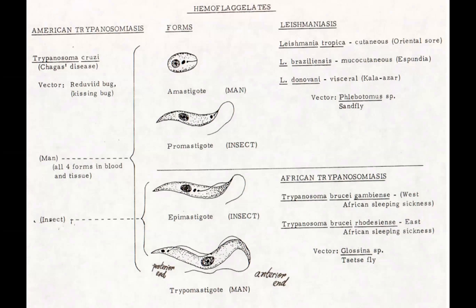Here's the American trypanosomiasis diagram. At the top in reverse order: here's the amastigote — all forms are in the blood and tissue. The amastigote has an internal flagellum but no external flagellum. The promastigote has the kinetoplast and nucleus visible with the flagellum projecting anteriorly. With the African trypanosomiasis, we'll cover trypanosoma brucei gambiense and trypanosoma brucei rhodesiense. The kinetoplast location moves — posterior end here, mid-section here, anteriorly here — and that's key to identifying the different trypanosomes.